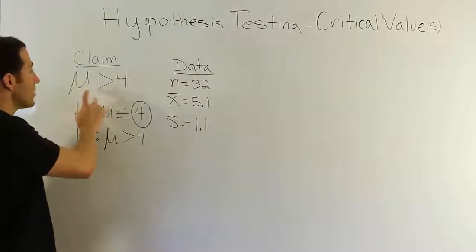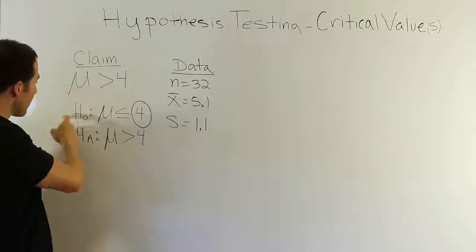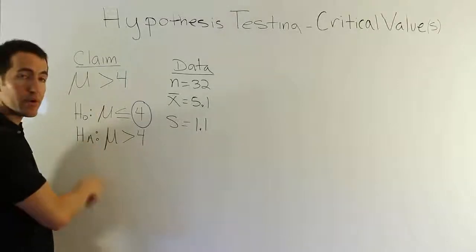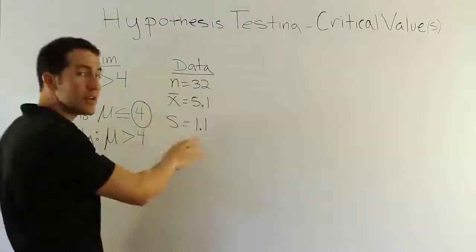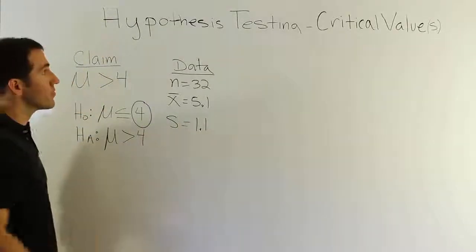Remember, we're testing the claim that the mean time to complete a bachelor's degree is greater than four years. We have the competing pair of hypotheses, HO and HA, here that we've been working with. We had some data. From the data, we had calculated a test statistic. So let's talk about this critical value idea.